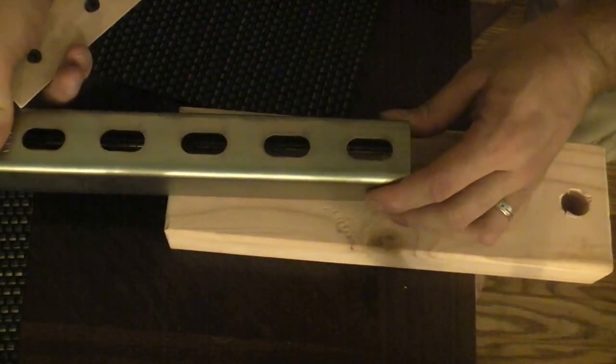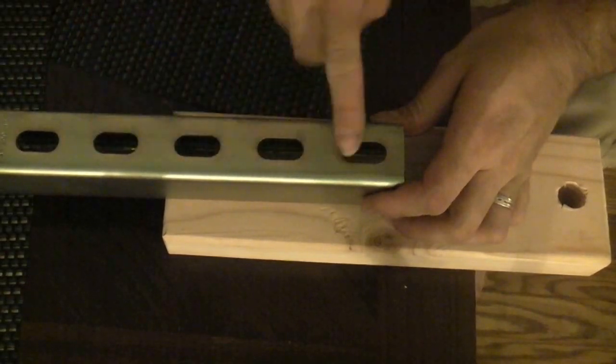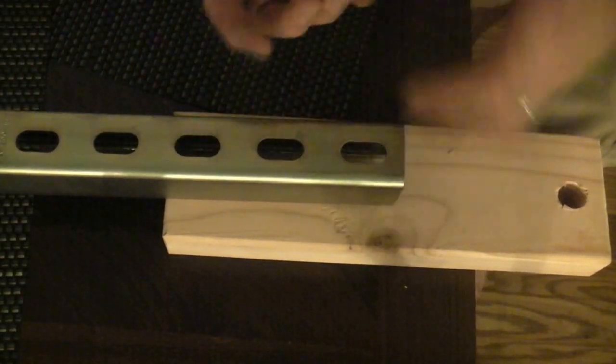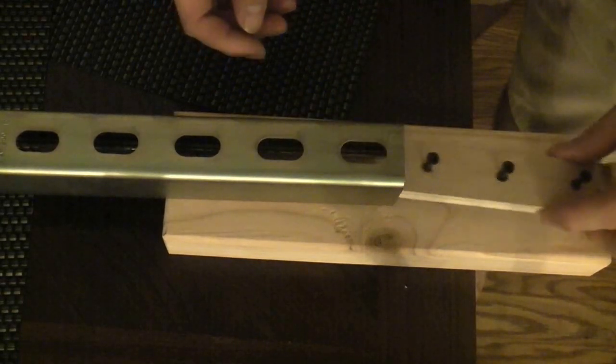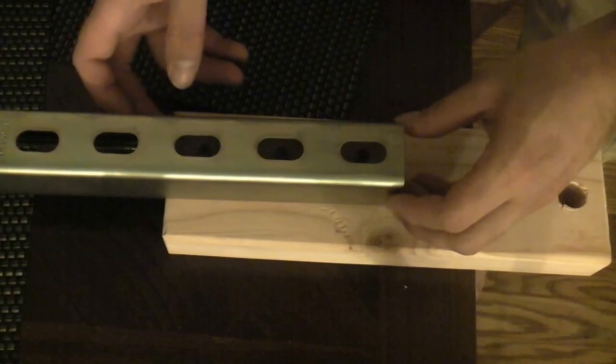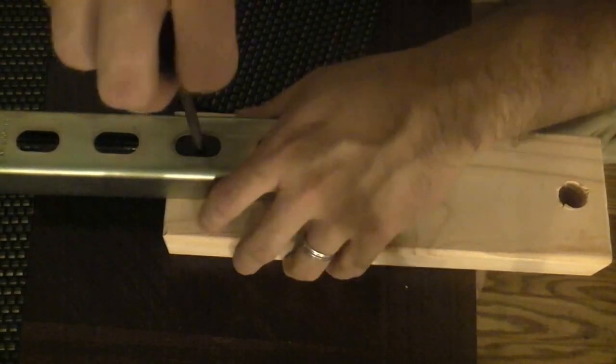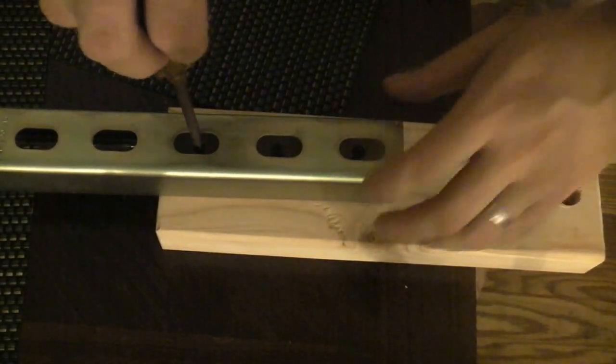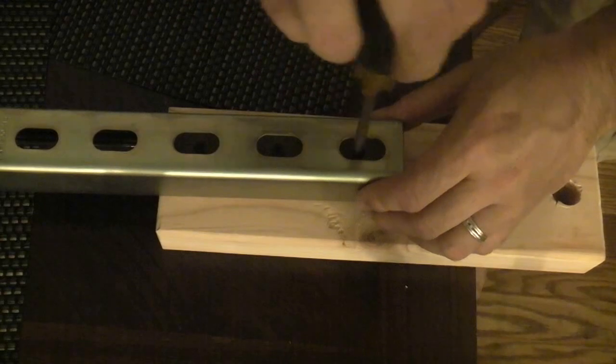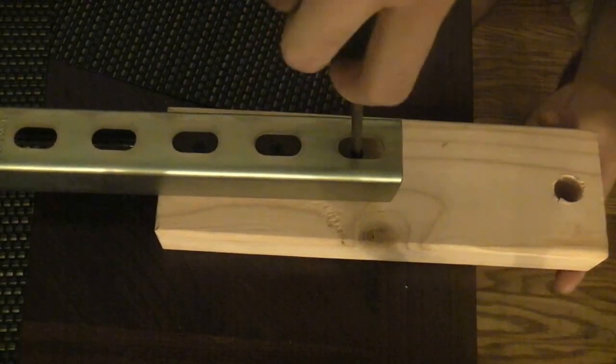You want to line up these holes with the strut here. You take your piece like this, slide it in to where the pilot holes in this end piece line up with these screws. And then you start screwing this in.